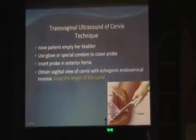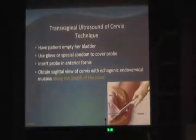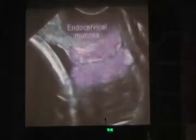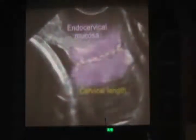The technique itself is very important, and I want to review it in detail. You need to make sure that the patient has emptied her bladder before the ultrasound. You use a special condom, or even a regular latex glove, to cover the gel-tipped ultrasound probe. You insert it into the vagina and direct it into the anterior fornix. You try to obtain the sagittal view of the cervix using the endocervical mucosa as a guide to the true position of the entire os, thereby avoiding confusion with the lower segment of the uterus. Take care to avoid exerting undue pressure on the cervix, since that may artificially increase its length.